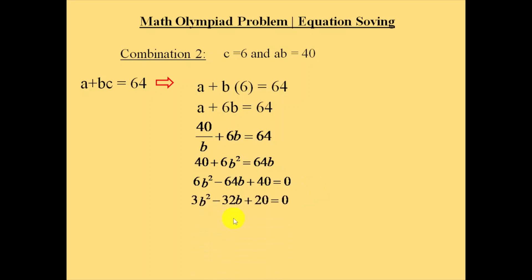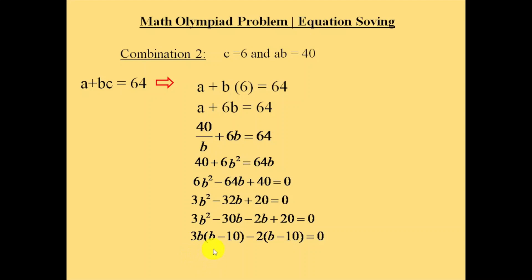We can divide the entire equation by 2, giving 3b squared minus 32b plus 20 equals 0. Split 32 into 30 and 2: 3b squared minus 30b minus 2b plus 20 equals 0. Taking 3b common from the first two terms gives 3b into b minus 10. Taking 2 common from the last two terms gives 2 into b minus 10. Taking b minus 10 as common factor gives b minus 10 into 3b minus 2 equals 0.